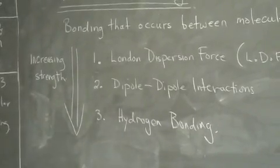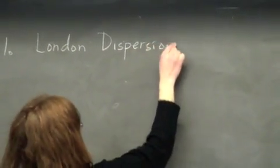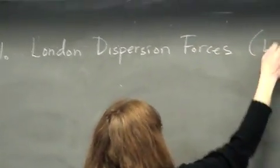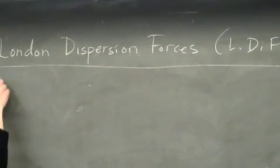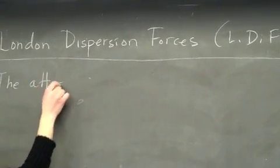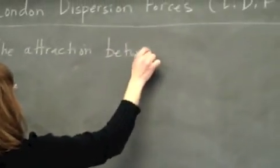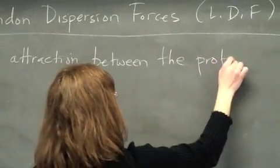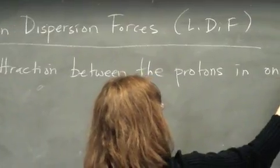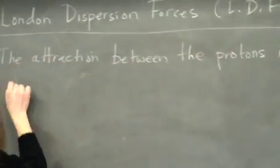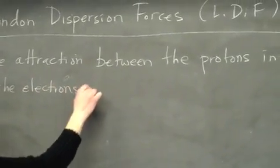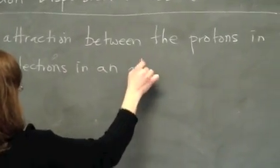So London dispersion force is the weakest. Let's start there. It's defined as the attraction between the electrons in one molecule and the electrons in an adjacent molecule.